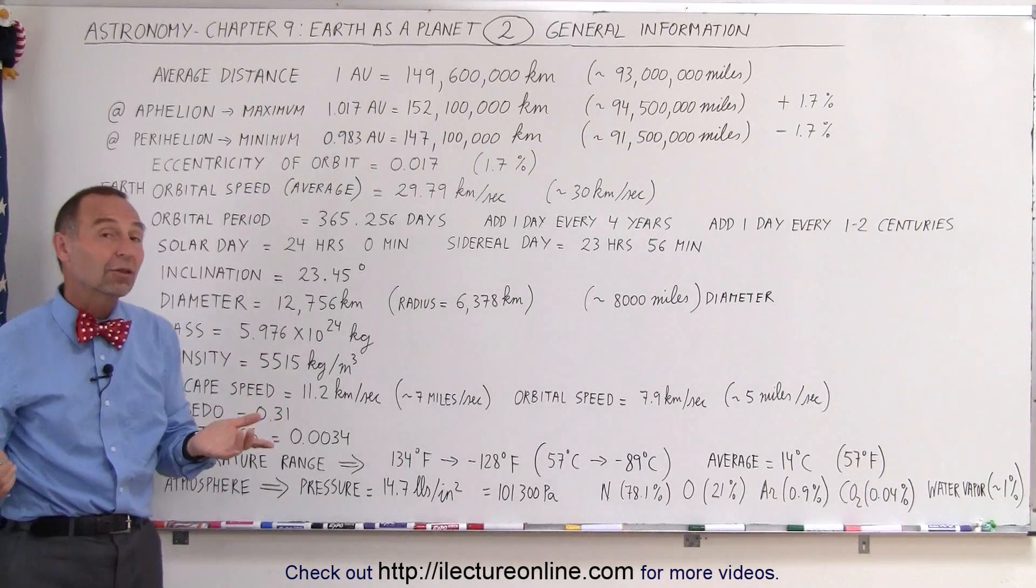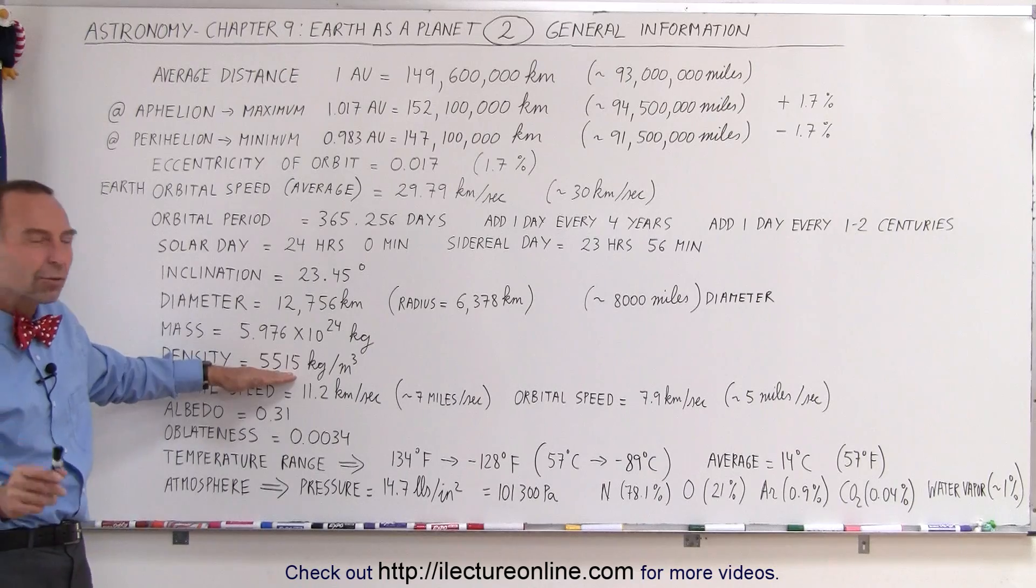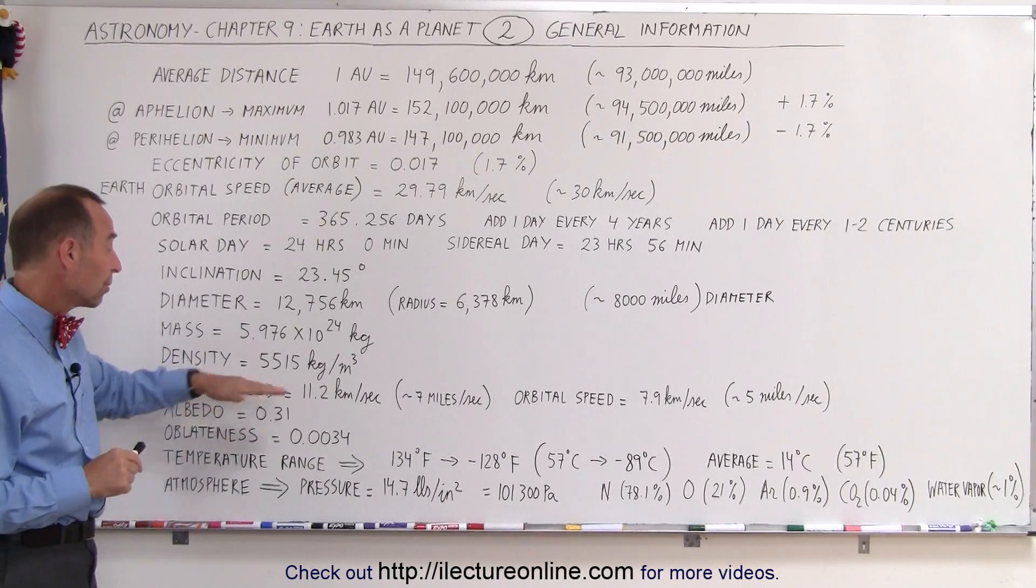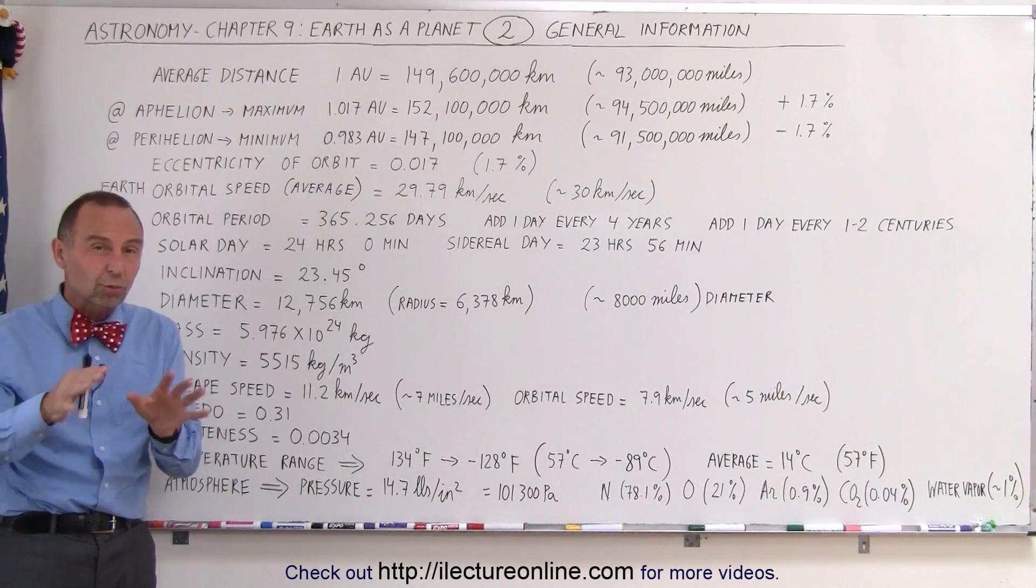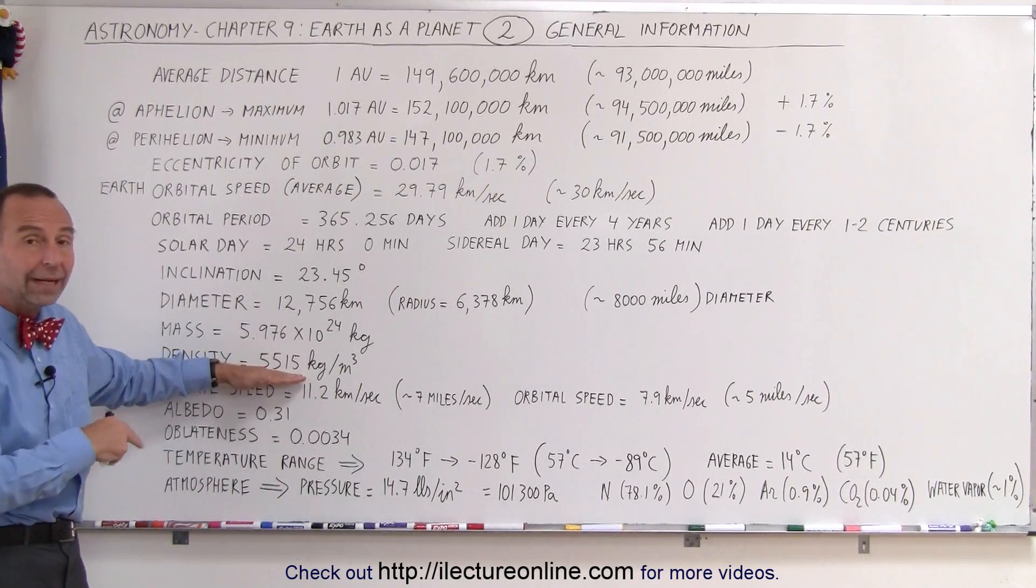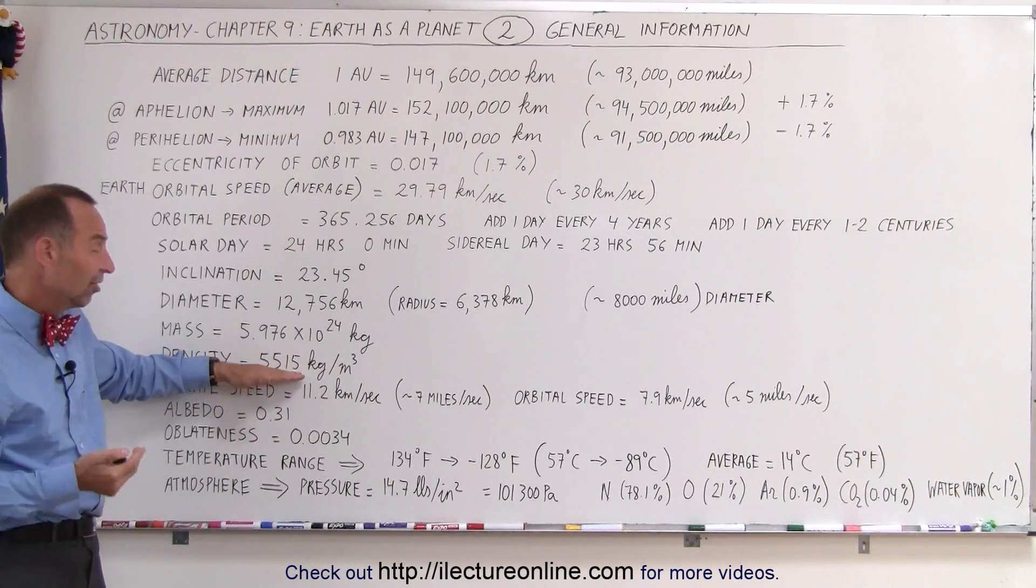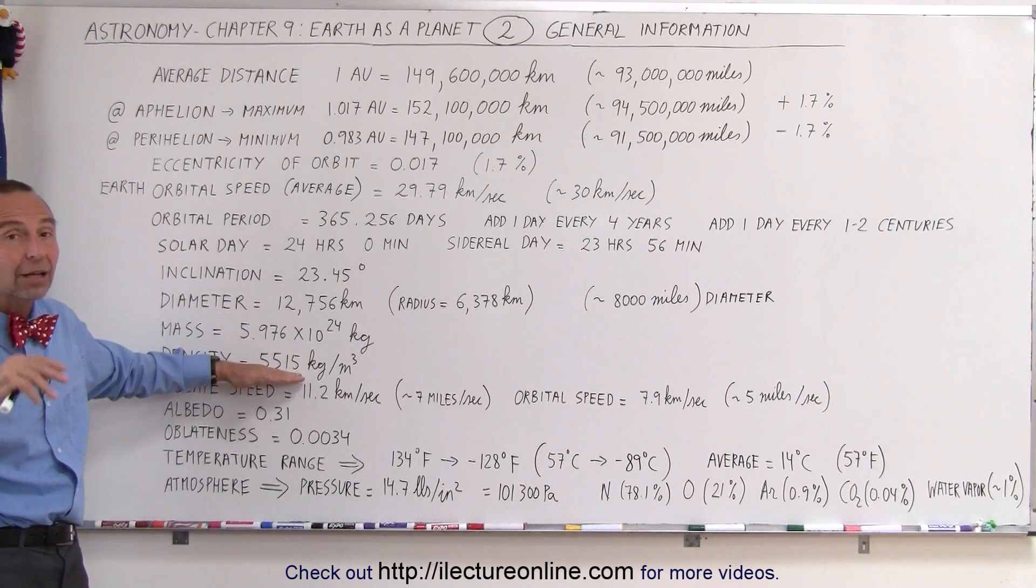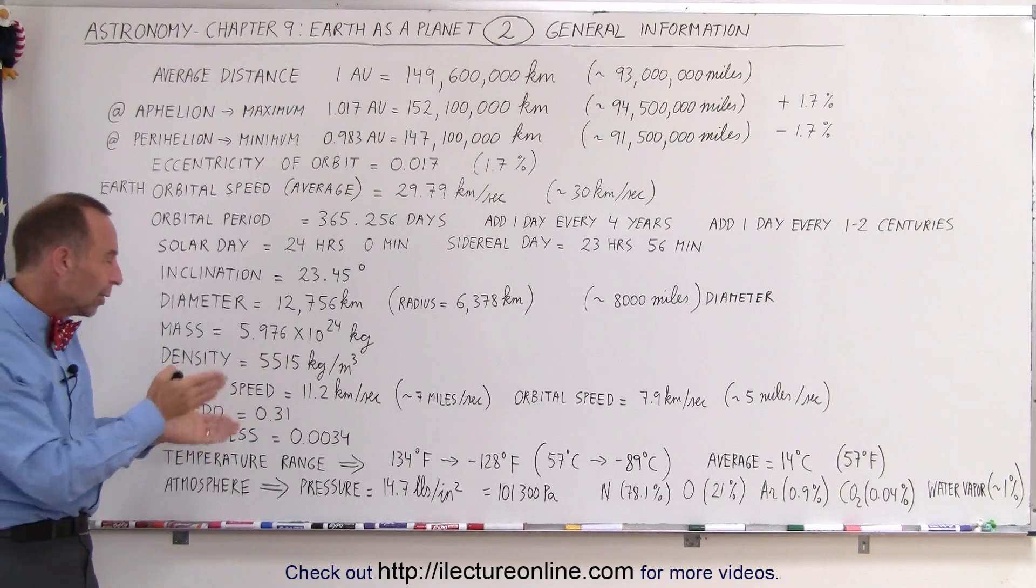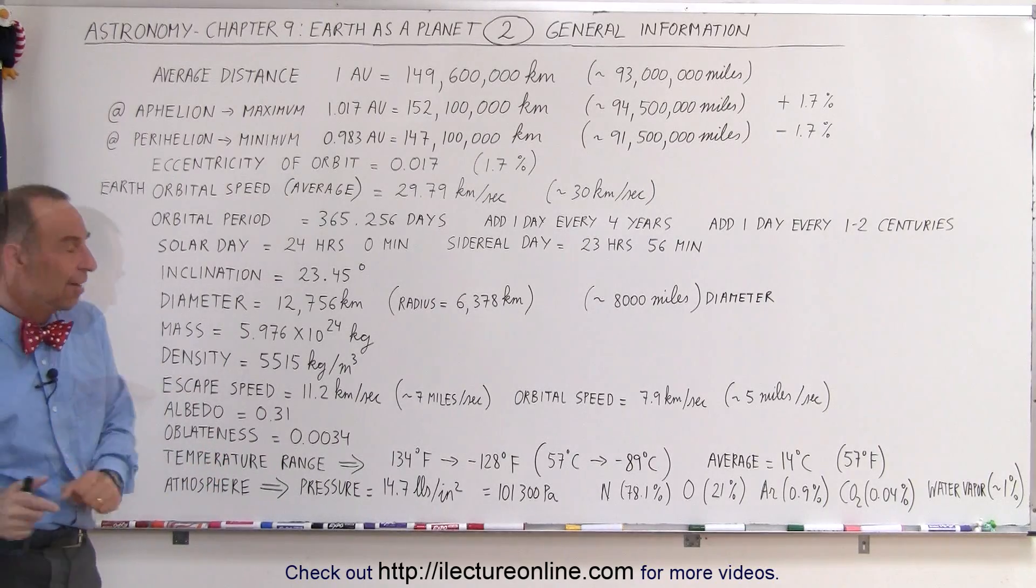The density of the Earth is quite interesting. Notice the density is 5,515 kilograms per cubic meter. Compared to the density of water, which is 1,000 kilograms per cubic meter, and the density of rock, which is roughly 3,000 kilograms per cubic meter. Since the Earth is much more dense than the density of water and the density of rock, you know that there must also be quite a bit of metal in the Earth. Since the density of metal, the most common metal, iron, is almost 8,000 kilograms per cubic meter, you can see that when you average things out, that means, based on the density, that the Earth must be about half rock and half metal.